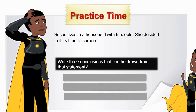Susan lives in a household with six people. She decided that it's time to carpool. Write three conclusions that can be drawn from that statement. Let's go boys and girls. Put on your thinking cap. You can do this.